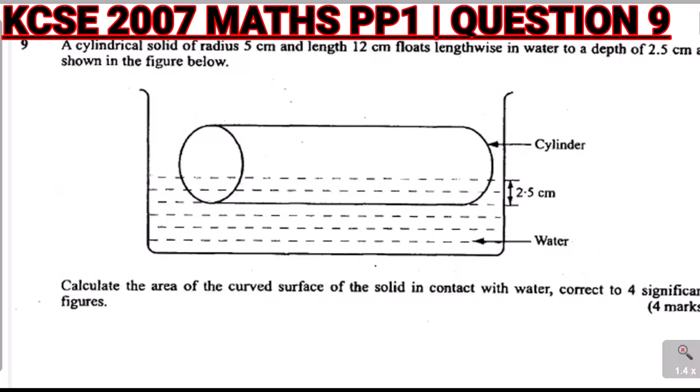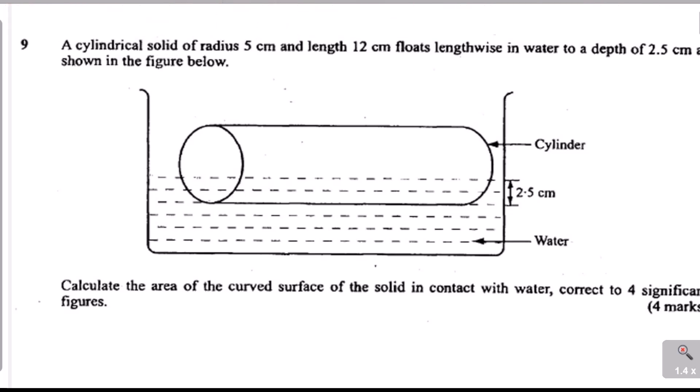KCC 2007 paper 1, question number 9. A cylindrical solid of radius 5 cm and length 12 cm floats lengthwise in water to a depth of 2.5 cm as shown in the figure. The question asks us to calculate the area of the curved surface of the solid in contact with the water, correct to significant figures.